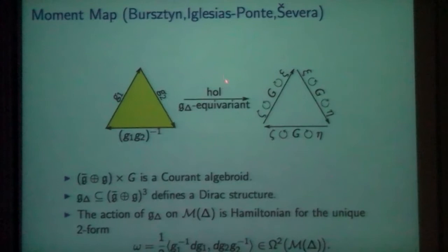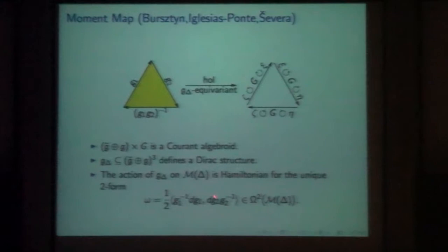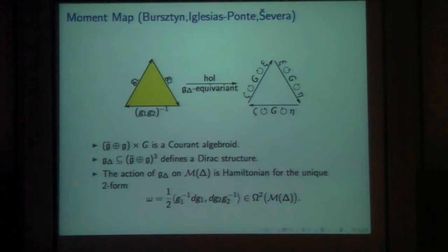We interpret the holonomy map as a moment map for this Dirac structure. The framework that allows us to do that was written up in a paper called something like 'Dirac moment maps' by Amy, Gay, David, and Powell. There's a unique two-form on the moduli space of the triangle which allows you to do that — it's just the left-invariant form for one edge and the left-invariant form for the other edge. It doesn't look symmetric at first, but it actually is a very symmetric definition.